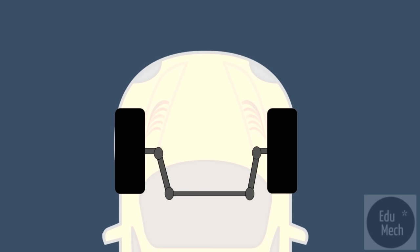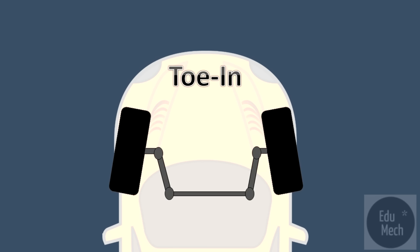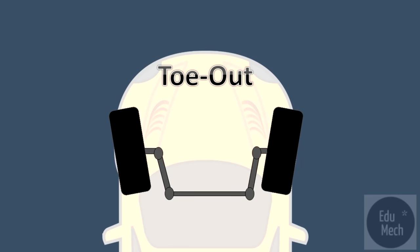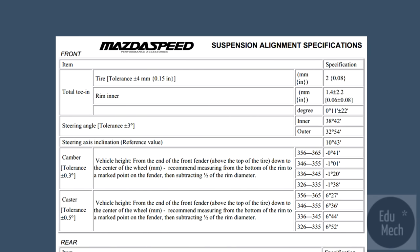When a vehicle is toe-in, the fronts of the tires are closer together than the rear of the tires. When a vehicle is toe-out, the front of the tires are further apart than the rear of the tires. Every vehicle will have its own relative toe setting, which can be found in the maintenance manual or technical specifications.